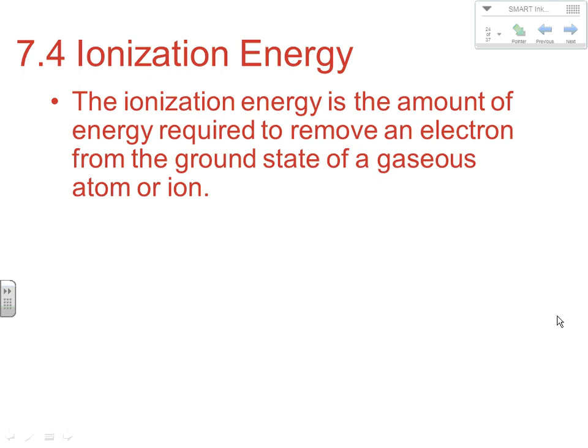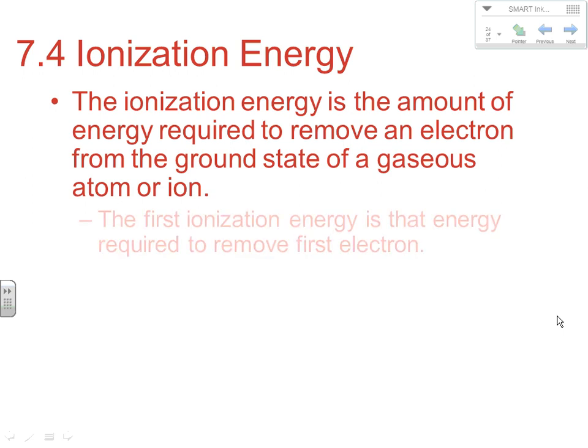Welcome to AP Chemistry at Hannega High School. Today we'll be continuing our notes with Chapter 7, looking at other trends like ionization energy and electron affinity. Ionization energy is the amount of energy required to remove an electron from the ground state of a gaseous atom or ion.